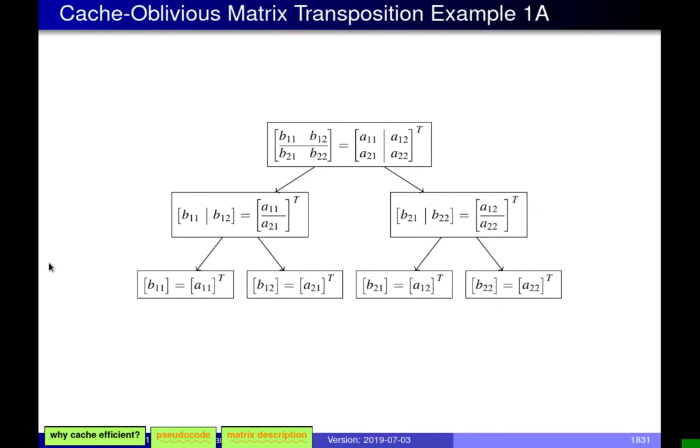To appreciate the cache efficiency of this algorithm, we need to consider a much larger matrix — maybe 1024×1024 — rather than the 2×2 example, which would fit in any reasonable cache. Because the algorithm keeps partitioning into smaller sub-problems during recursion, eventually as you recurse deeper you reach a point where the sub-problems are small enough to fit in the cache. By using this divide-and-conquer approach, problems become smaller and smaller until the sub-problems fit in cache, contributing to good cache efficiency.